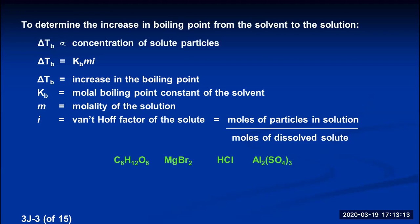C6H12O6, sugar, is a non-electrolyte — it does not ionize or dissociate in water. If you put one mole of sugar in water, you'll have one mole of dissolved particles, so a non-electrolyte always has an i value of one. Magnesium bromide is an electrolyte that dissociates into one magnesium ion and two bromide ions, so one mole of magnesium bromide produces three moles of solute particles — its i value is three. HCl is a strong acid that ionizes into a hydrogen ion and a chloride ion, so its i value is two. Aluminum sulfate dissociates into two aluminum ions and three sulfate ions per formula unit, giving an i value of five.